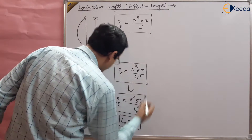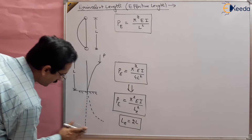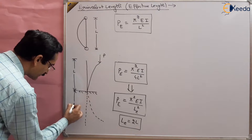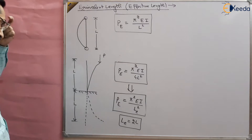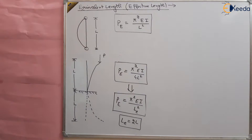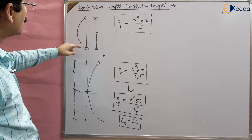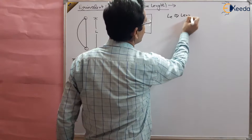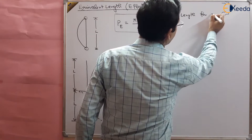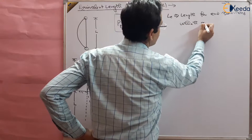By figure we can show that the length should be doubled. If the actual length is L, then one more length L is required — a mirror image — so that the loading gives the same value as that of the both-ends-hinged case. So equivalent length is basically the length for different end conditions which gives the same Euler's load.